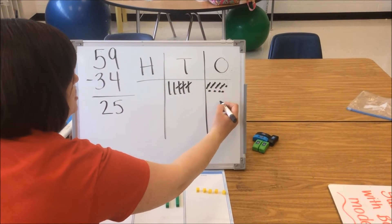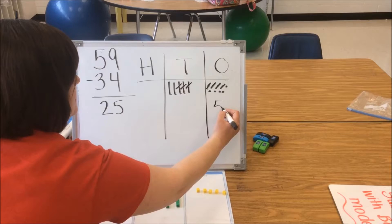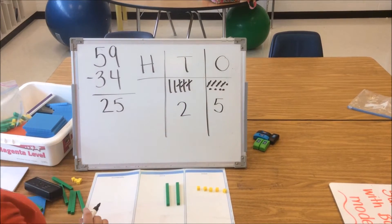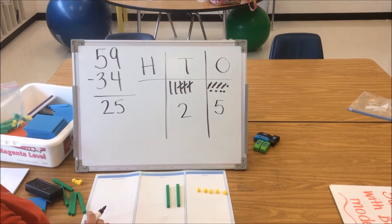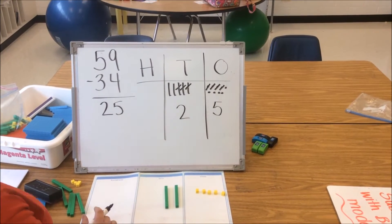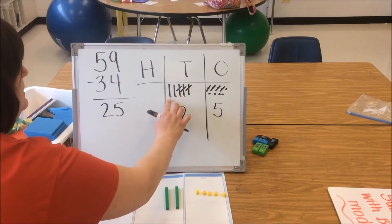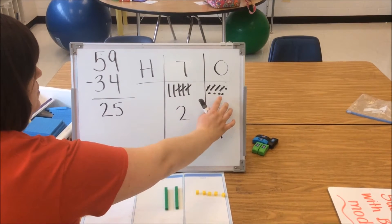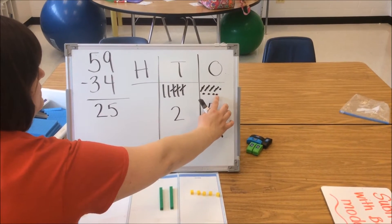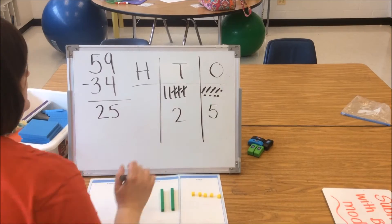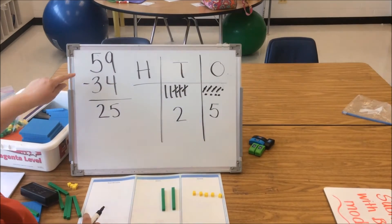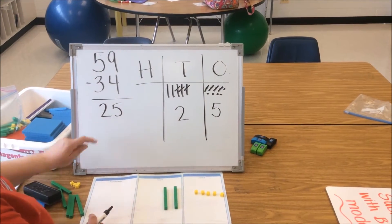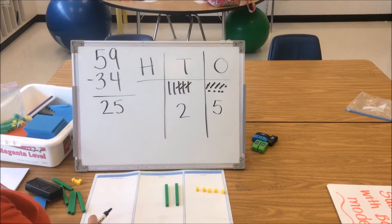And then students count to see what is remaining. It's important that students again count their model as well: 10, 20, 21, 22, 23, 24, 25. So 59 minus 34 is 25.